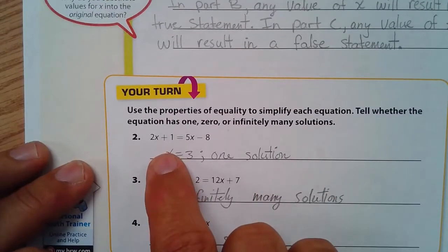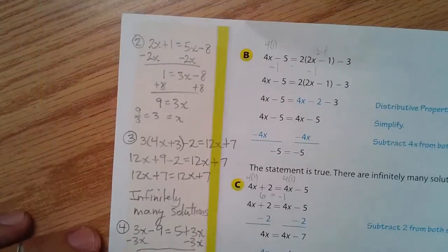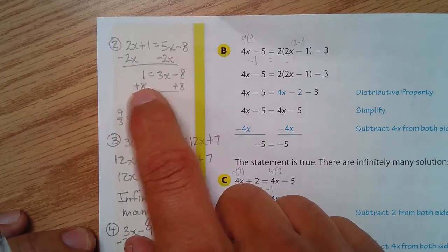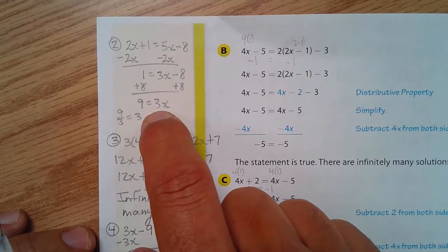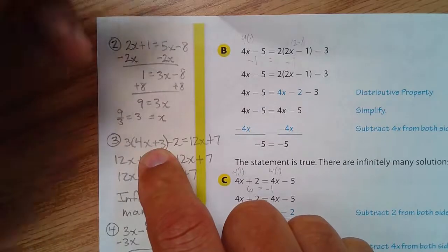So in this, I have 2x plus... I did this right up here. I did it right up here. I subtracted 2x. I added 8 to both sides. And I got 3x equals 9, which means x equals 3. That's one solution right there. x equals 3. Done.